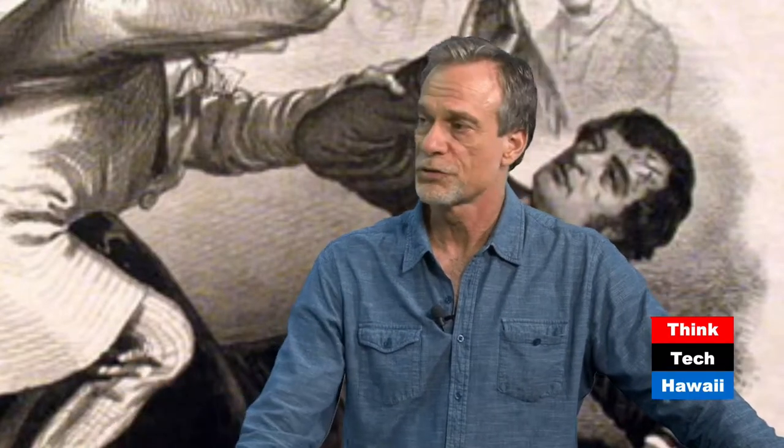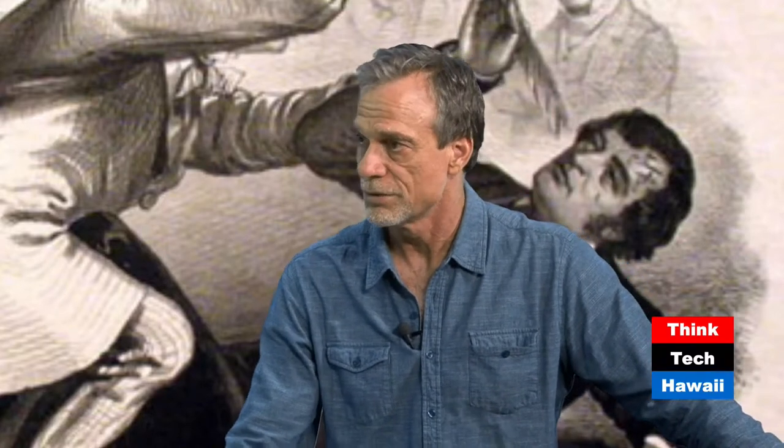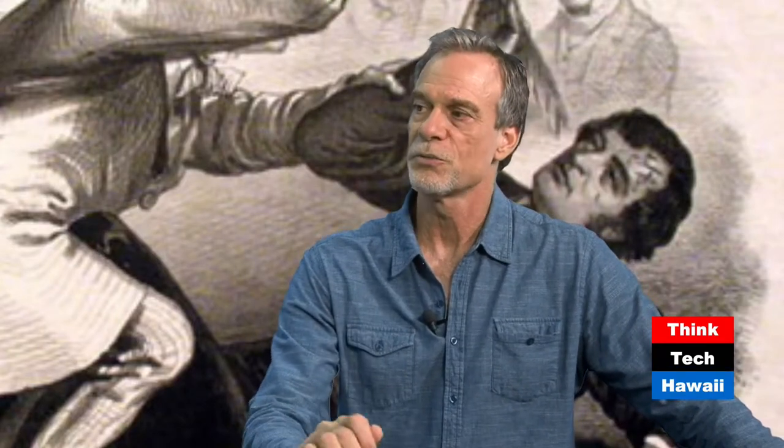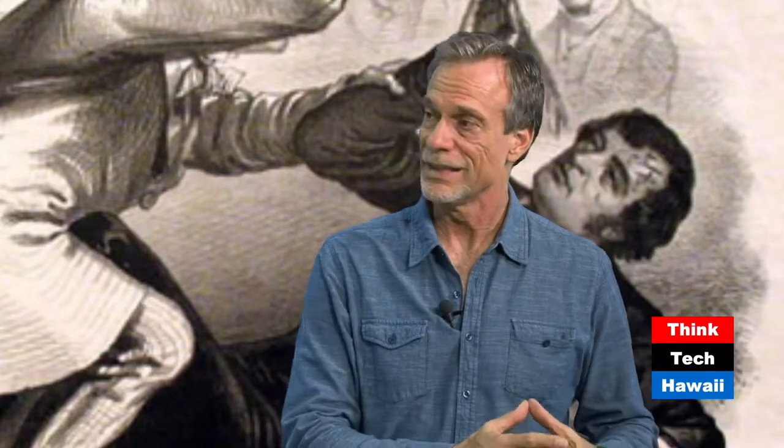Senator Stephen Douglas from Illinois wanted to run a railroad across the nation — in 1854 — through Chicago. But Southern senators wanted to run it through the South. In order to get them to compromise, he said: you allow me to run my railroad through Chicago, and in return I will allow Kansas to come in as a state in which popular sovereignty will decide whether it's slave or free.